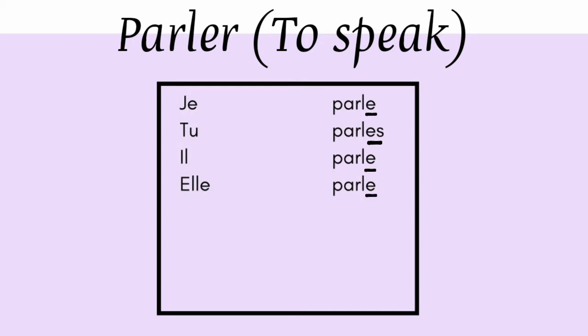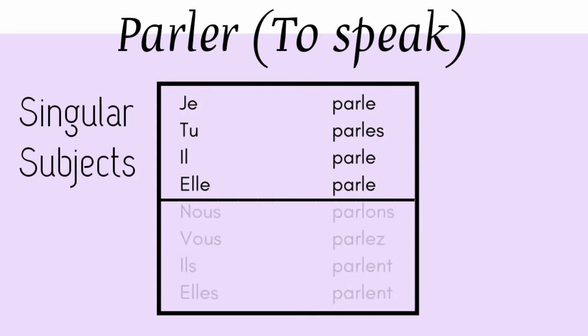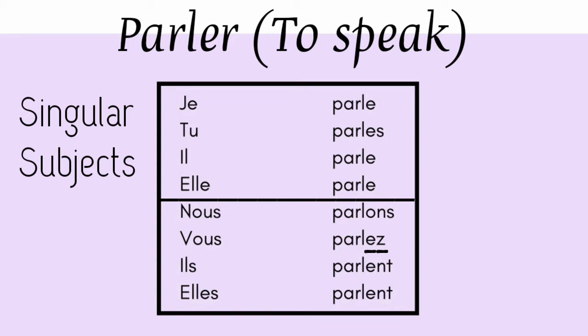So those four are singular subjects. 'Nous parlons', 'vous parlez' with EZ at the end, 'ils parlent', 'elles parlent'. So these are the plural subjects.